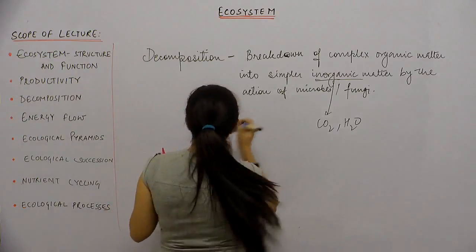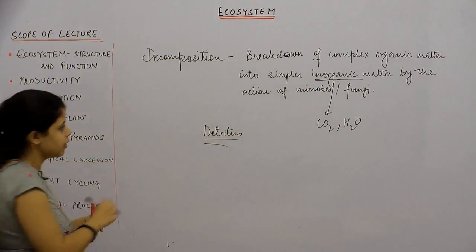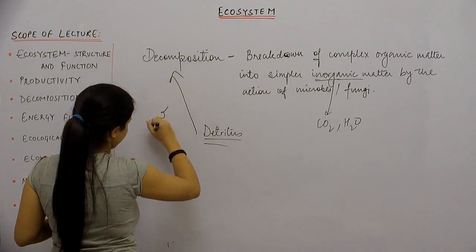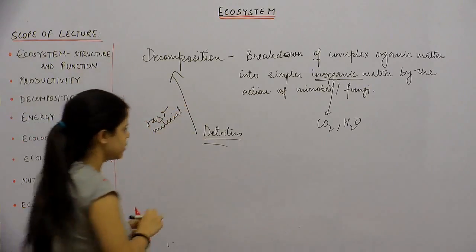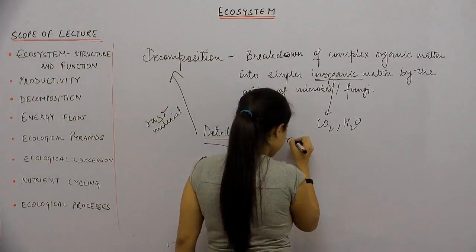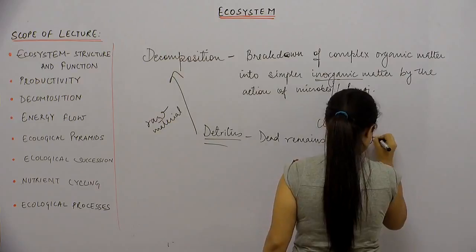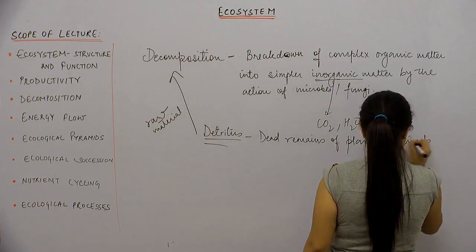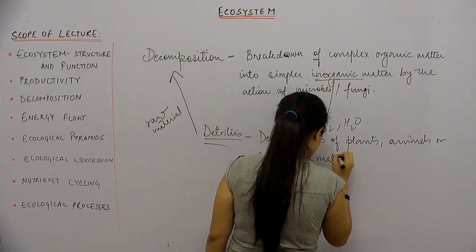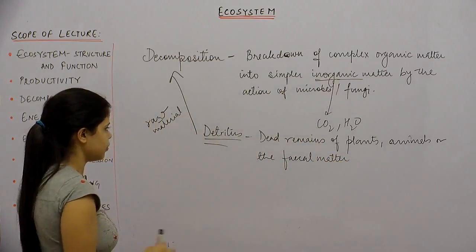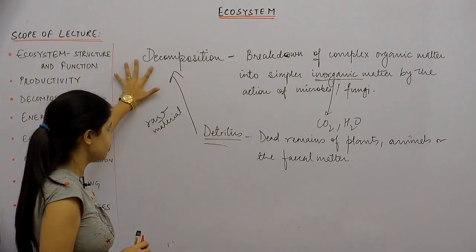Let's get to know what is detritus, because detritus is the raw material of decomposition. Detritus is the dead remains of plants, animals, or the fecal matter. All of this — the dead remains of plants, animals, or the fecal matter — comprises the detritus.